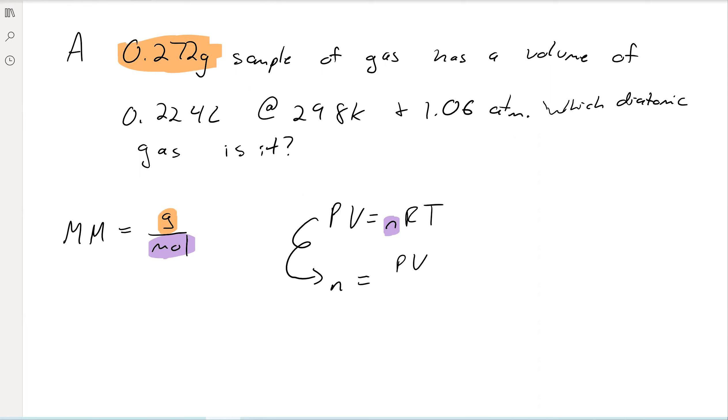And then we would get n is equal to PV over RT. And now we're going to start plugging and chugging. So our pressure is 1.06 atmospheres, and that's the correct unit of pressure according to R. Our volume is 0.224 liters, which is the right volume unit as well. Remember R is in liters. We know what our R is. It's the gas constant. And then finally, temperature 298K, that's also the correct unit. So everything's looking good in terms of units. We don't have to convert anything.